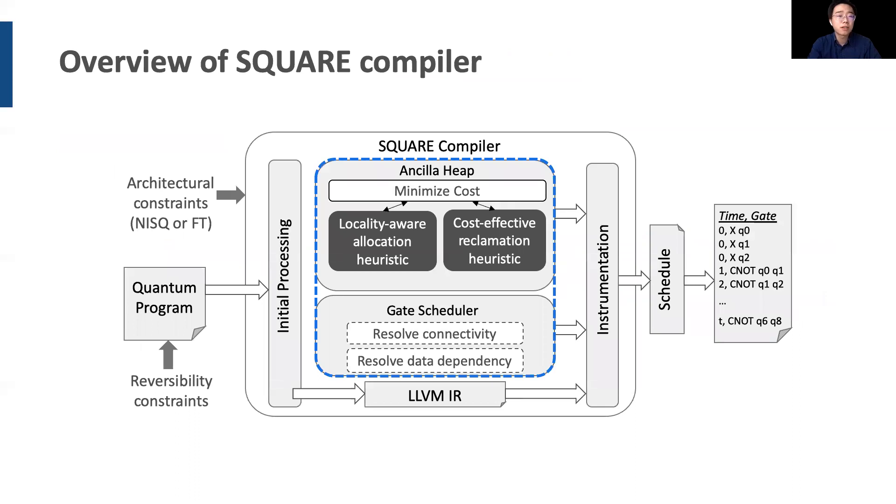Specifically, Square is a quantum compiling software that automates the process of qubit allocation and reclamation. From left to right, we can see how a quantum program goes through the compiler. The core of the compiler is the heuristic algorithms that we call locality-aware allocation and cost-effective reclamation. The compiler produces a schedule of quantum gates for the underlying architecture as output.